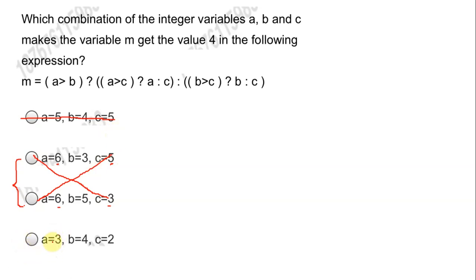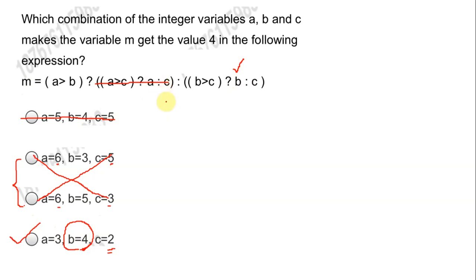Now let us check option D. If a is greater than b — a is 3 and c is 2 — wait, checking a greater than b: the condition for that part does not execute. The comparison is done between b and c. Here b is 4 and c is 2, so b is greater than c, and it returns the value of b which is 4. So the correct answer for this question is option D — it returns b which is 4, and that gets assigned to m.